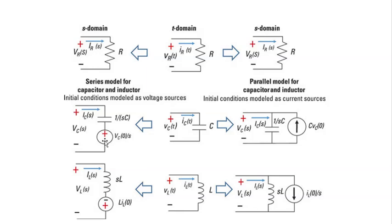I have tried to show this whole idea in a table format for resistor, capacitor, and inductor. Resistors cannot ever have an initial condition, so in the S domain they always look like a simple resistor. For capacitors, as I said, you can use either the parallel mode — a capacitor without initial condition in parallel with a current source — or a capacitor without initial condition in series with a voltage source.